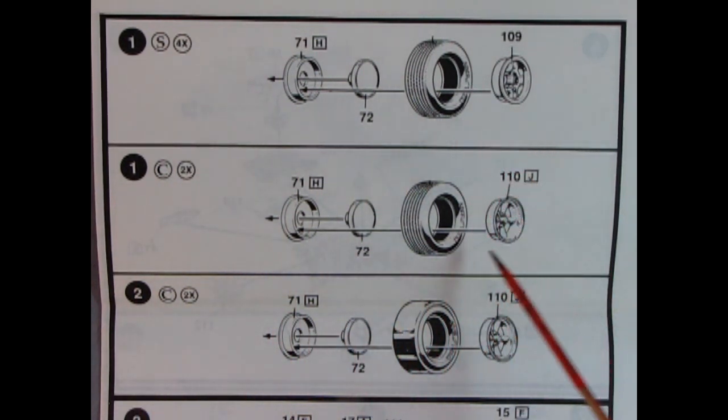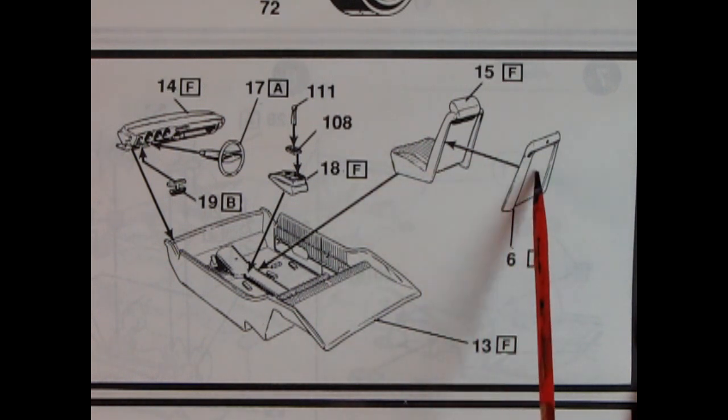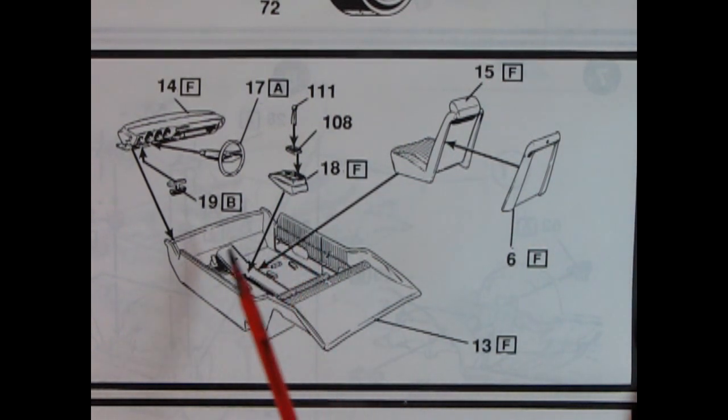Panel 3 shows our interior going together. This is an old school style tub interior with the sides, floor pan, transmission tunnel, and rear package shelf all molded as one piece. Then you do get these nice two-piece Rally seats, the three-piece shifter. There is also the bench seat molded into the back of the bucket here. And then we also have our steering wheel, our dashboard, and our floor pedals.